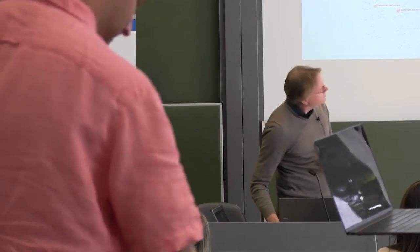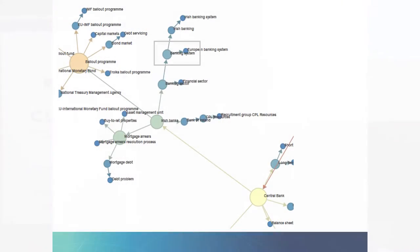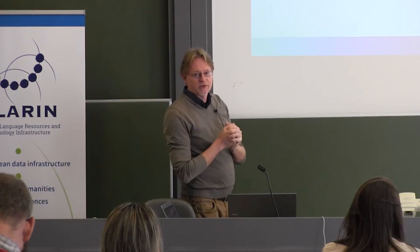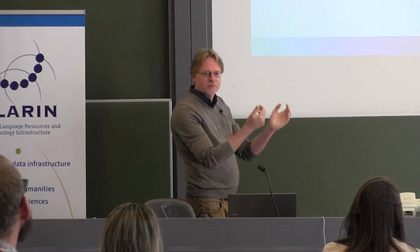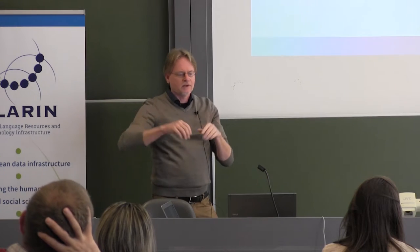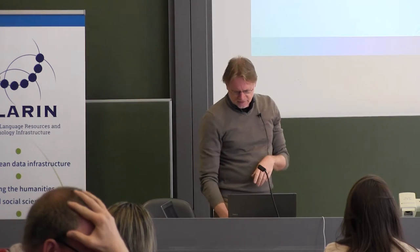If we zoom in on this branch — this is all online, so I'll give you the URL so you can play with it — you get more specific topics in different branches. Here you get things about mortgages. As you know, Ireland had a financial crisis as well, like some other countries, and there was a lot of reporting about mortgages, about the central bank, about debts. So this is the mortgage branch, that's the banking branch, that is the IMF branch, and so on. You get an organized distribution of connected terms or topics in the archive.